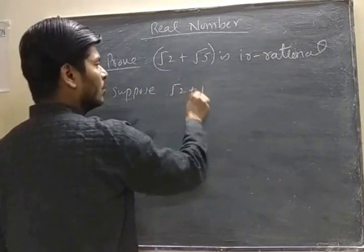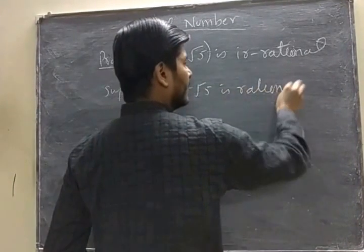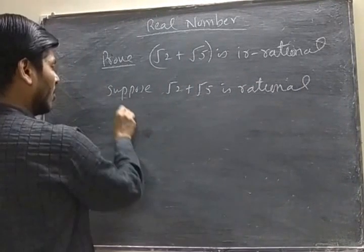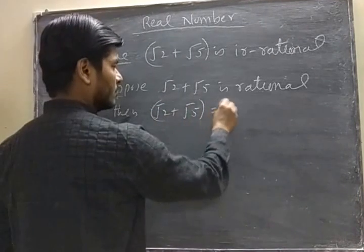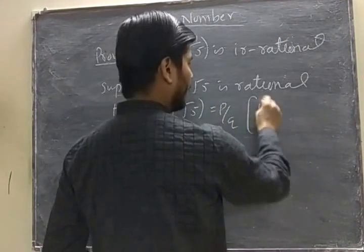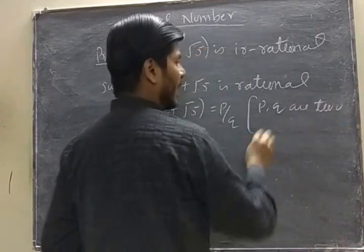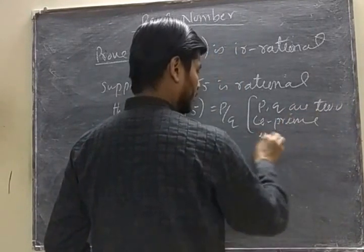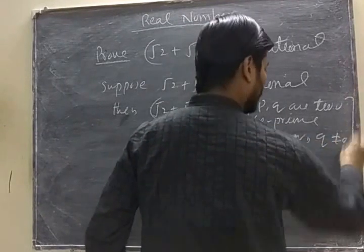Suppose root 2 plus root 5 is rational. If it is rational, then it can be written in the form of P by Q, where P and Q are two co-prime integers and Q not equal to 0.